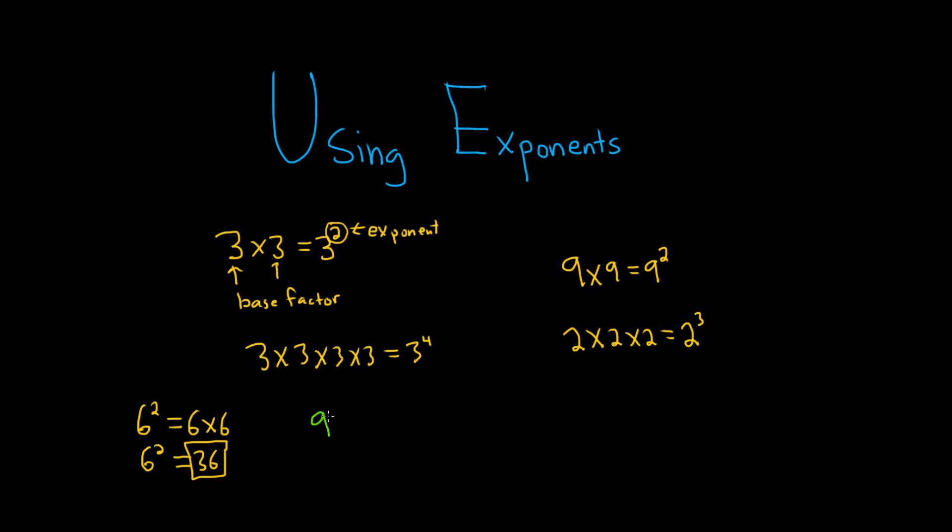Say we have nine squared. So nine squared means nine times nine. And again, just from multiplication, nine times nine is equal to 81. So we can say that nine squared is equal to 81.